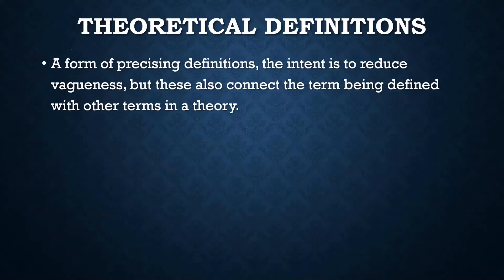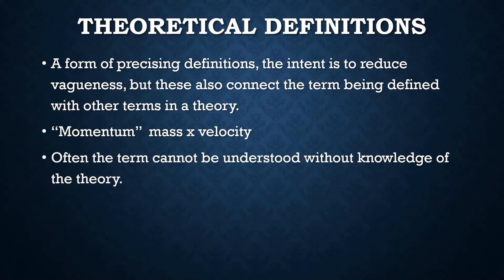Theoretical definitions are a form of precising definitions — the intent is to reduce vagueness, but these connect the term being defined with other terms in a theory. For example, momentum in physics: momentum is mass times velocity. You have to know the broader theoretical structure — what mass is, what velocity is — and often the term just can't be understood at all without that knowledge. Sometimes this is related to unobservables, like electrons or quarks, and we give theoretical definitions to those objects.